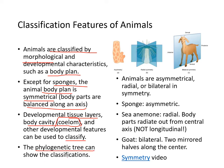The symmetry types are asymmetrical, radial, or bilateral. A sponge is an example of an asymmetric organism. Sea anemone has radial symmetry — body parts radiate out from the central axis, not longitudinal as the textbook says. Goat hair is bilateral, meaning two mirror halves along the center.